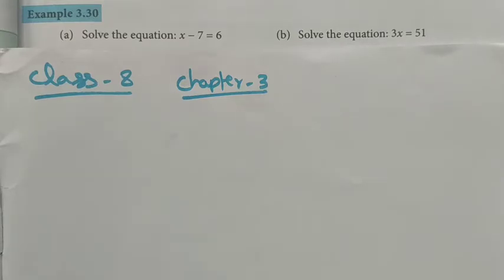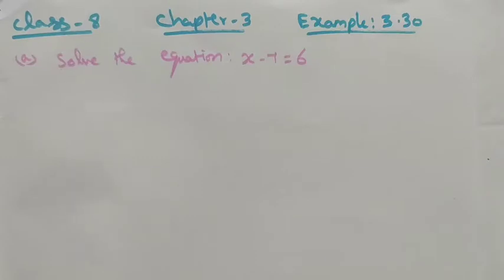Hi students, Class A, Chapter 3, Example 3.30. Part (a): Solve the equation x minus 7 equals 6. Part (b): Solve the equation 3x equals 51. Let's see one by one, starting with Part A.